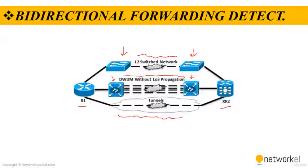One option for quickly identifying routing protocol neighbor reachability loss is to set the hello and keep-alive timers on the routing protocol to a very short interval. However, introducing fast hellos does not always reduce the failure detection interval to a level where the network can route around the problem before time-sensitive applications notice the communication failure. In addition, fast hellos can tax the router CPU and do not scale well as the number of neighbor sessions increases.